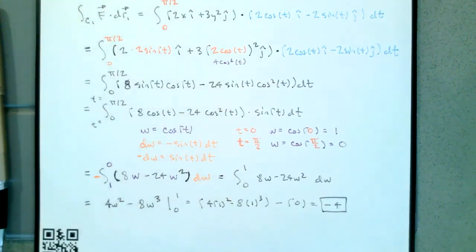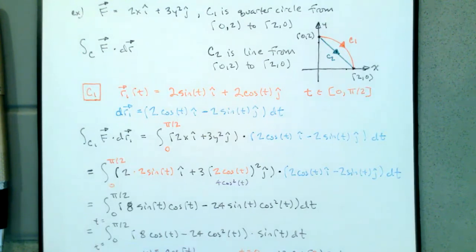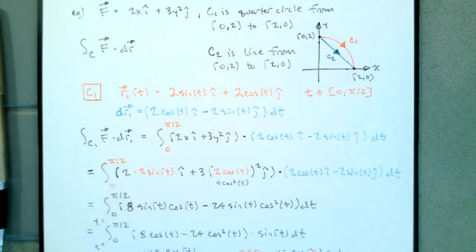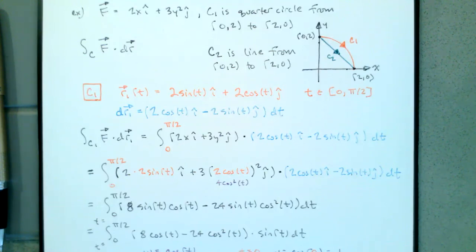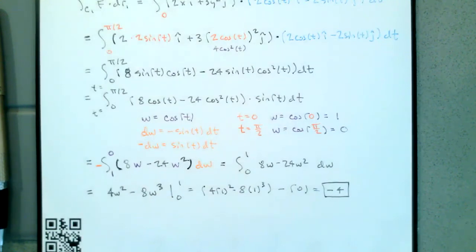So what does this negative 4 represent? That depends on what our vector field is measuring. We can make this whatever we want — anything that we can use a dot product for. Maybe the force is a force field and the path is a path that we're trying to walk through that force field. So our integral would represent work — work equals force times distance.